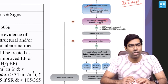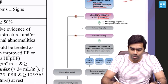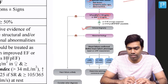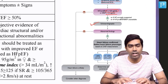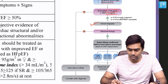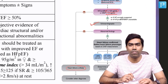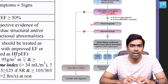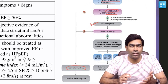If the NT-proBNP is more than 125, or if the BNP values are more than 35, then you can go on to echocardiography to confirm whether it is heart failure or not. If the NT-proBNP or BNP values are normal, because they have a high negative predictive value, heart failure becomes extremely unlikely and you need to consider other possible diagnoses for these symptoms and signs.